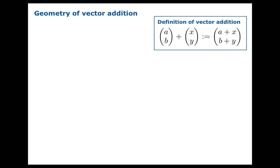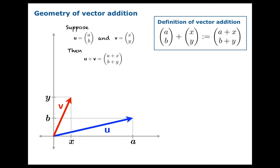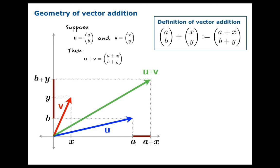Let's get a picture of vector addition. Suppose u and v have components as written, then we know that u plus v must have those components by our definition of vector addition. So let's draw prototypical examples of u and v, and we're looking for a picture of u plus v. One way to think about it is to take a segment of length x and add it to the segment of length a, giving a plus x, and similarly adding a segment of length y to a segment of length b to get b plus y.